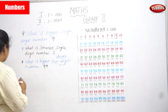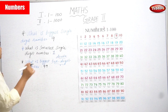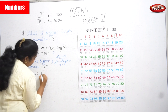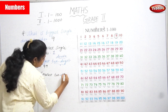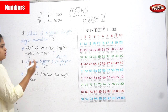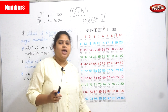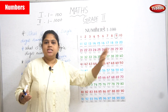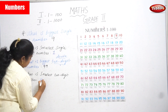Now what is the smallest two-digit number? Two-digit numbers start from 10. So from 10 to 99 we have all two-digit numbers. We said 99 is the biggest two-digit number, whereas 10 is the smallest two-digit number.